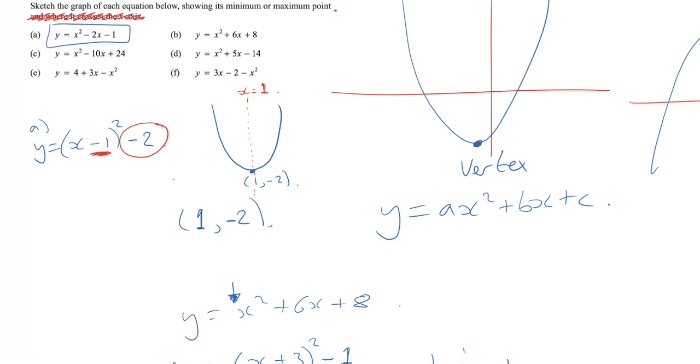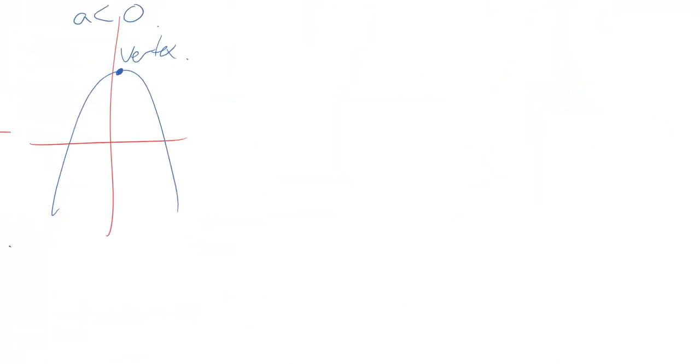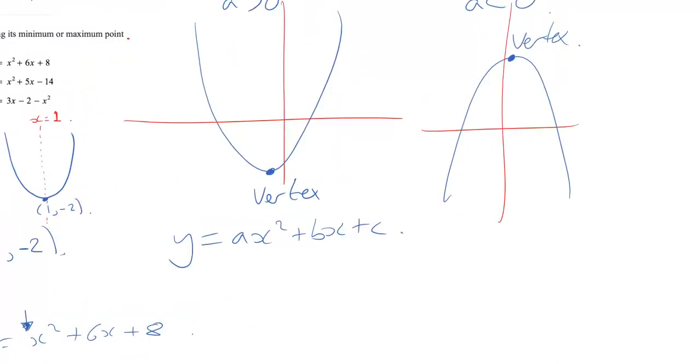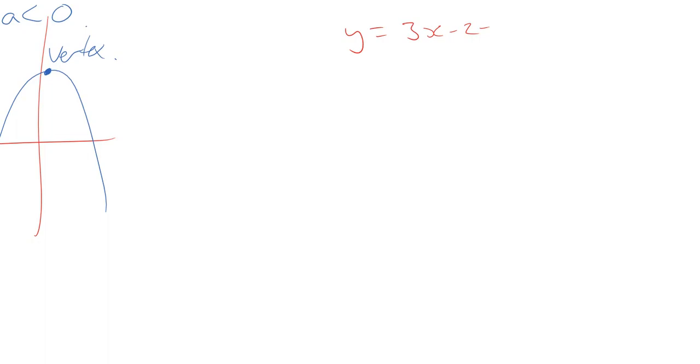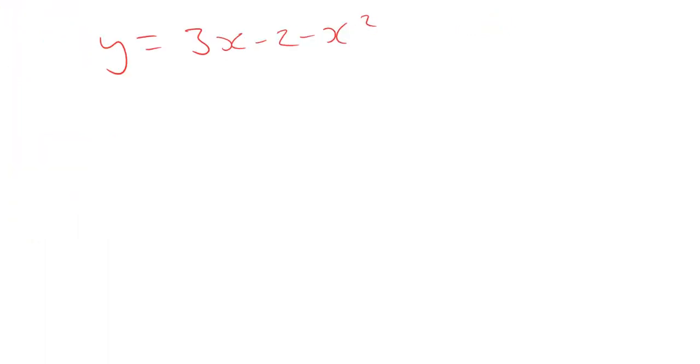Now, perhaps we should try one more challenging question. So let's have a little look at f. y equals 3x minus 2 minus x squared. Now, straight away, this looks different. So let's rewrite it in a way that is easier to understand. y equals minus x squared plus 3x minus 2, like that. Now, from here already, what I can see is this is going to be a sad face because I've got that coefficient of x squared is negative. It's a negative 1. So bear that in mind.